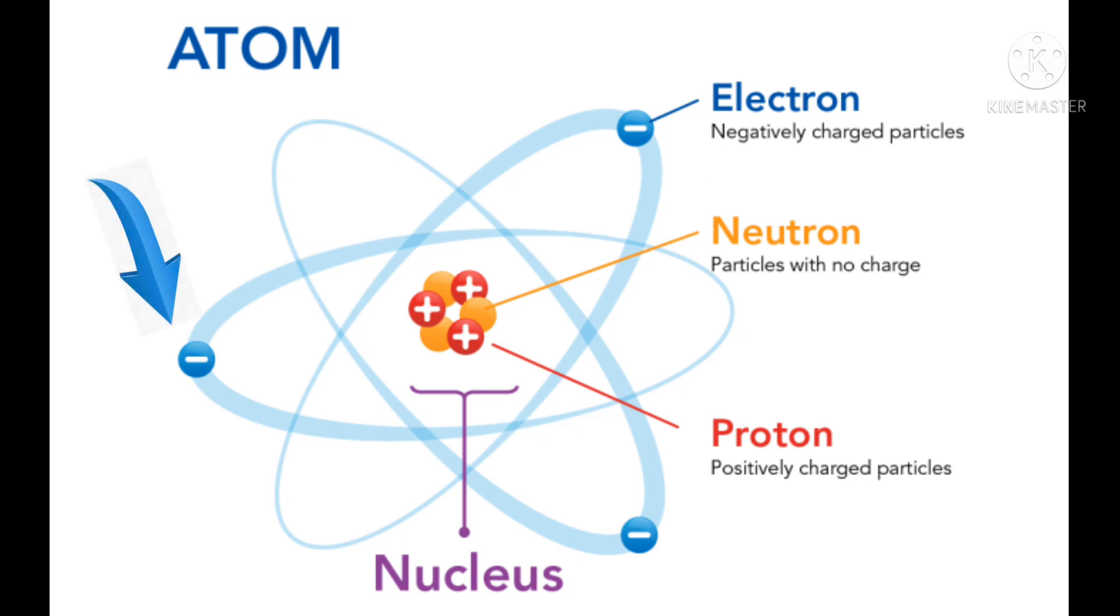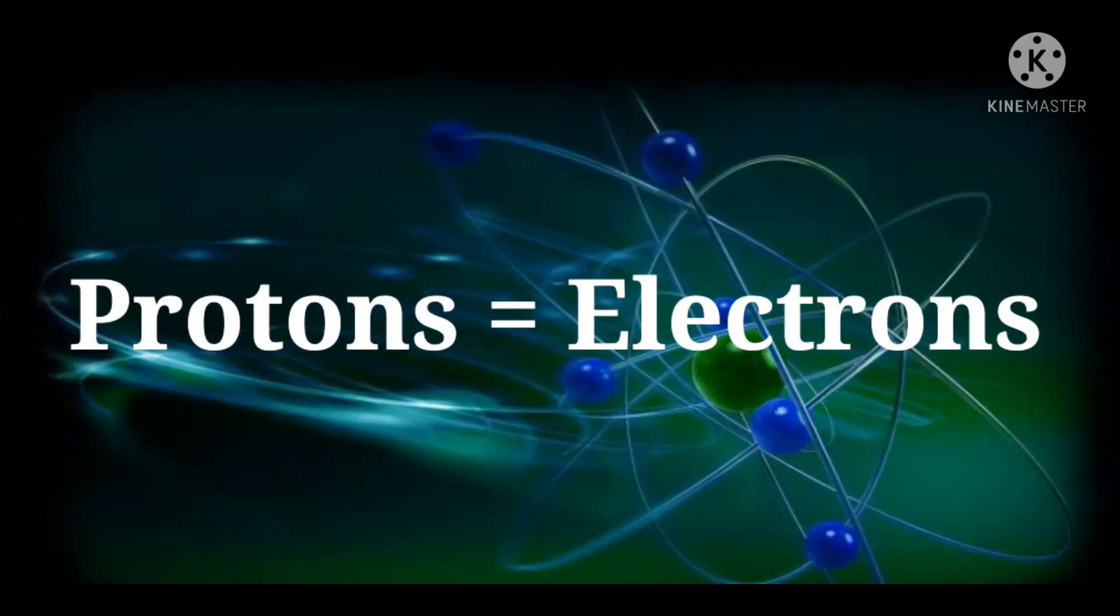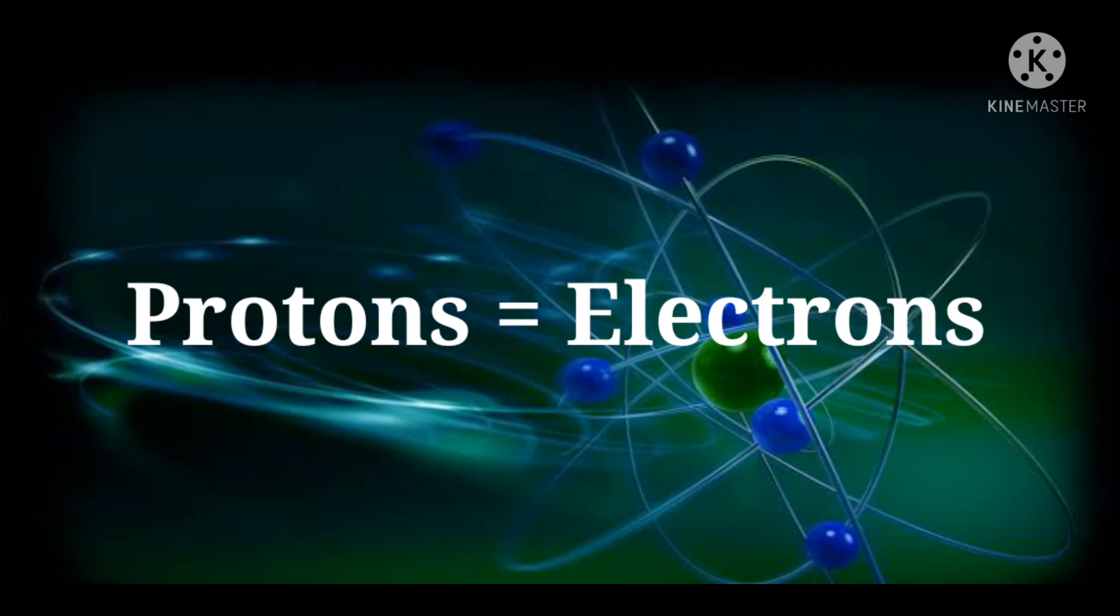Electrons are negatively charged particles situated on the outer orbits or the electron shells of the atom. They take part in chemical reactions. An electrically stable atom consists of the same number of protons as well as electrons.